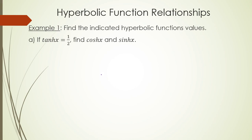The cool thing about hyperbolic functions is that they behave very similar to regular trig functions — not exactly the same, but very similar. For instance, if hyperbolic tangent is 1/2, find hyperbolic cosine and hyperbolic sine. We start with an identity, which can be found in your book at the very beginning of the section. One identity says that hyperbolic tangent squared of x plus hyperbolic secant squared of x is equal to 1.